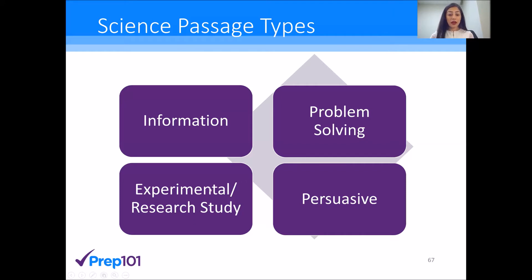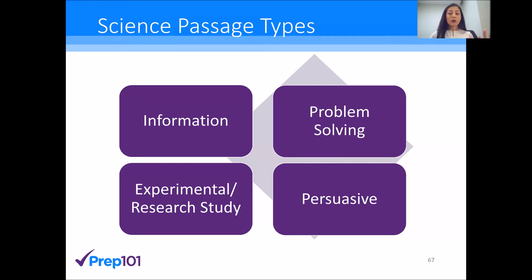The third type are experimental and research study passages. These are the ones that will test your rationale on the methodology, the results, the observations, and the conclusions of various experiments that have been conducted. They'll give you a hypothesis, experiment Y and experiment Z, and based on what you're trying to test, you want to show you have sound scientific skills to determine why methodology Y or methodology Z is correct. With the changes that happened in 2015, we are starting to see a lot more experimental and research study passages, so be aware of that.